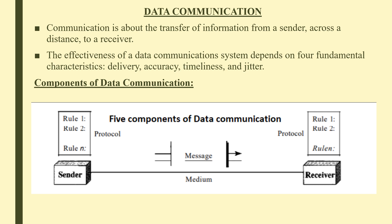The components of data communication: First, message — the information or data to be communicated. Sender — a device that sends a data message; it can be a computer, workstation, telephone handset, video camera and so on.